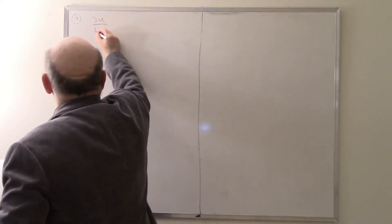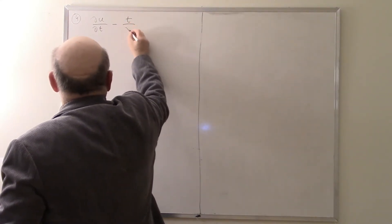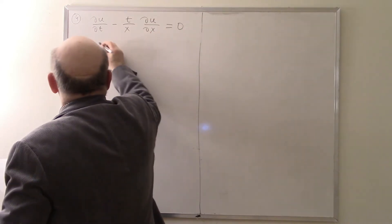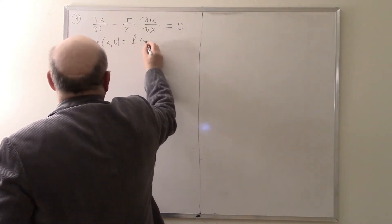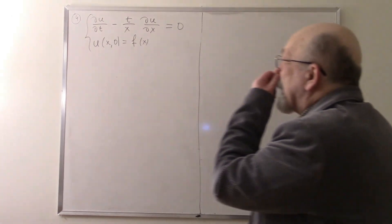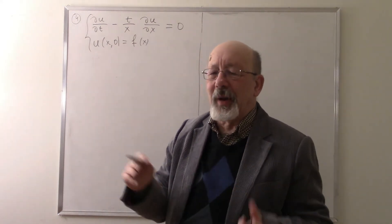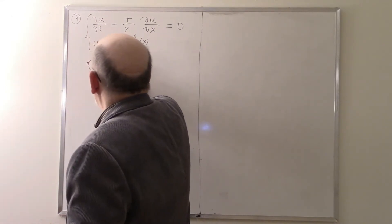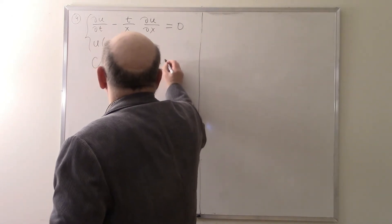Consider the last problem today, which is more interesting. The equation is du/dt minus (t/x)·du/dx equals 0, with initial condition u(x, 0) equals f(x). Here the coefficient depends on both x and t, and it is just an example.